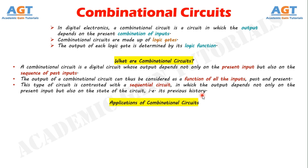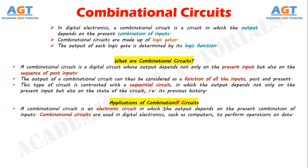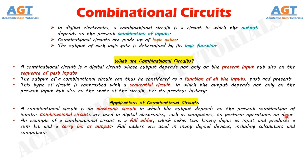Applications of combinational circuits: A combinational circuit is an electronic circuit in which the output depends on the present combination of inputs. Combinational circuits are used in digital electronics, such as computers, to perform operations on data. An example of a combinational circuit is a full adder, which takes two binary digits as input and produces a sum bit and a carry bit as output. Full adders are used in many digital devices, including calculators and computers.